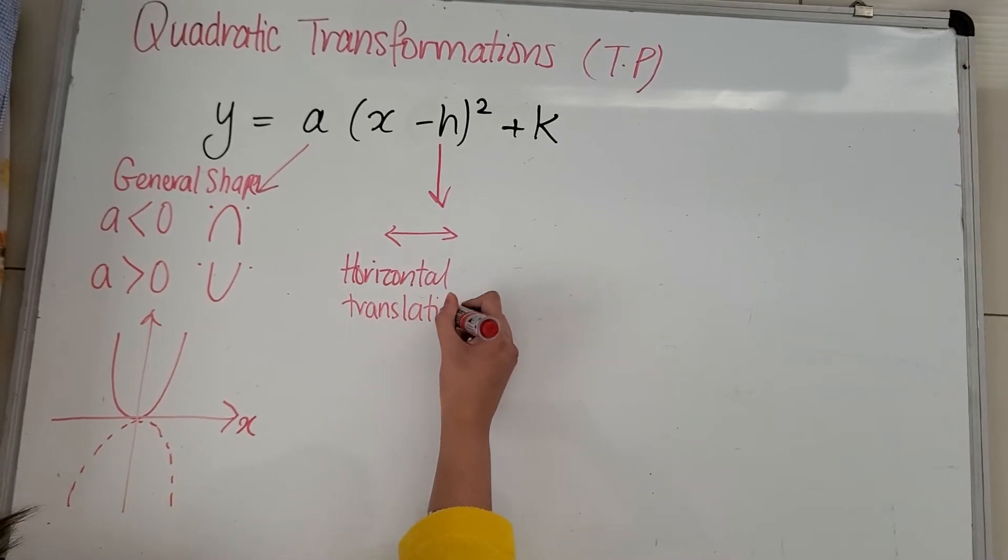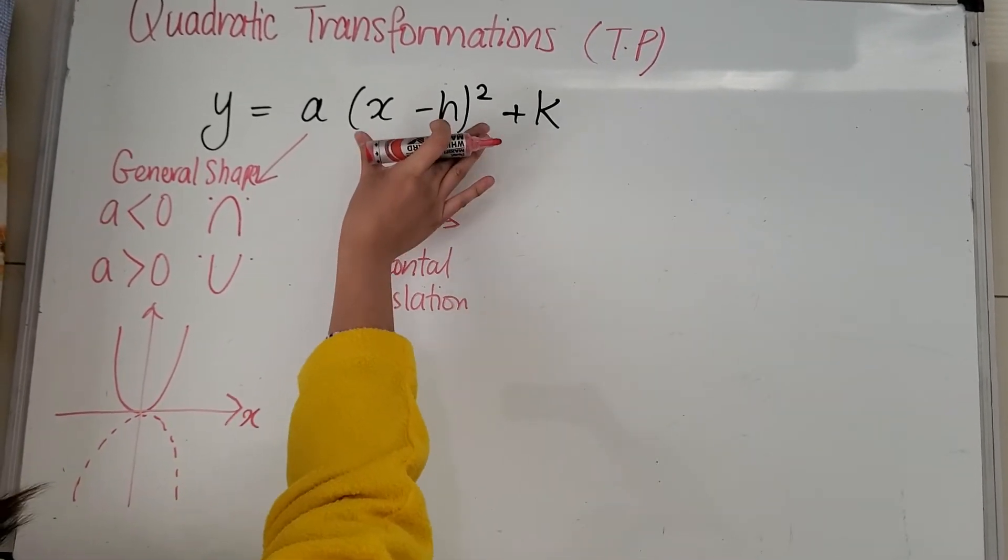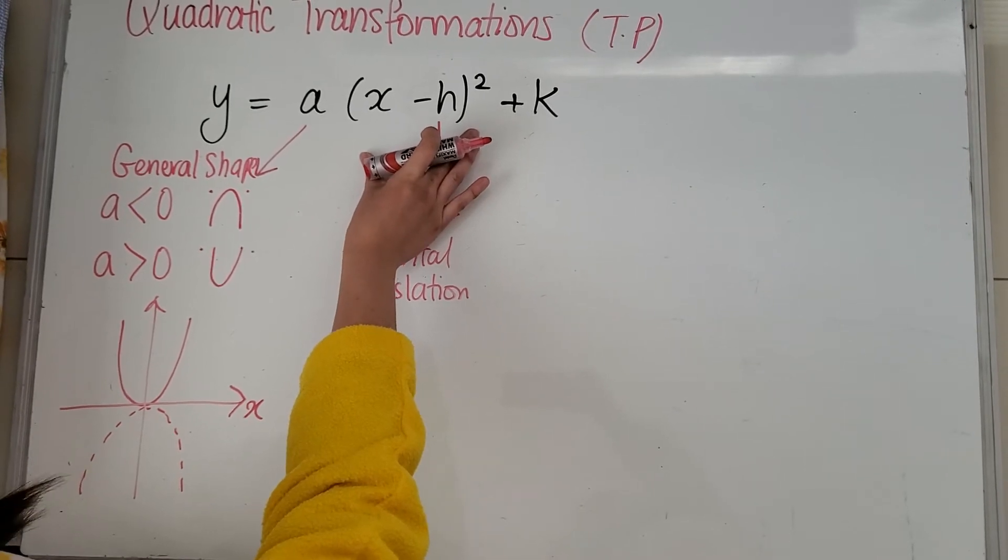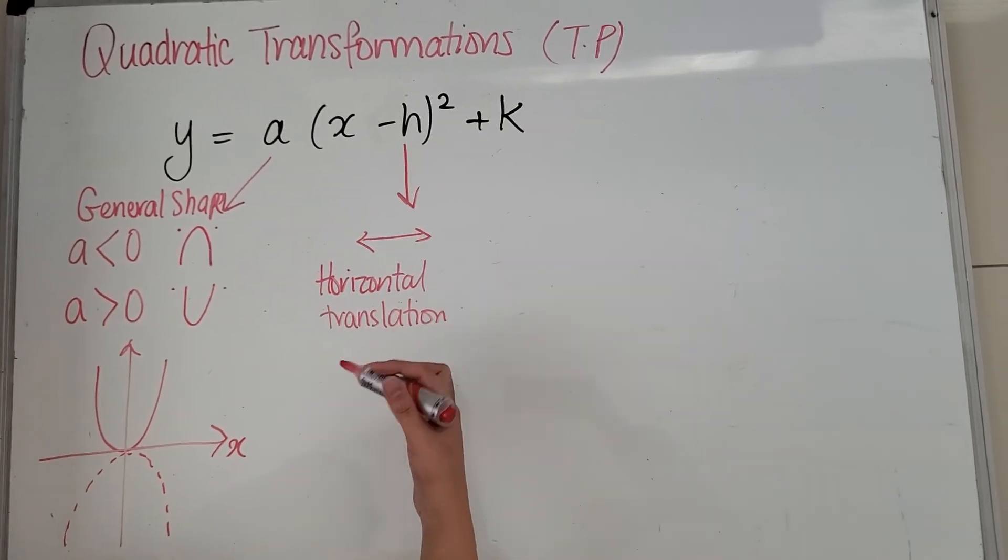The tip about this one is anything in brackets, swap sign. So this will be useful when we do circles later on. Anything in brackets, swap sign.